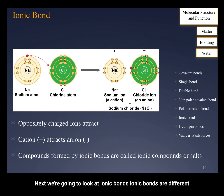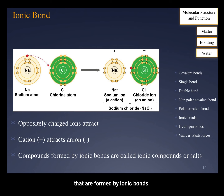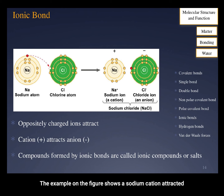Next, we're going to look at ionic bonds. Ionic bonds are a different type of bond — this is where opposites attract. Cations, or positive charges, are attracted to anions, or negative charges. Salts are compounds that are formed by ionic bonds. The example in the figure shows a sodium cation attracted to a chloride anion, which results in sodium chloride compounds.